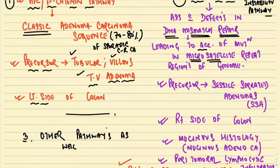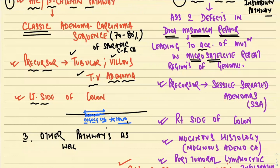Let me give an idea of what a microsatellite is. Suppose this is the entire genome — there are certain areas that have repeat sequences, for example CCG-CCG-CCG repeating perhaps 1000 times. These areas are called microsatellite repeat areas. Normally, they are present in everyone. In the MSI pathway, mutations are present in these microsatellite areas.